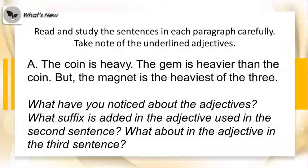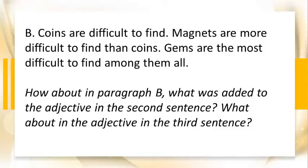Read and study the sentences in each paragraph carefully. Take note of the underlined adjectives. A. The coin is heavy. The gem is heavier than the coin. But the magnet is the heaviest of the three. What have you noticed about the adjectives? What suffix is added in the adjective used in the second sentence? What about in the adjective in the third sentence? B. Coins are difficult to find. Magnets are more difficult to find than coins. Gems are the most difficult to find among them all. How about in paragraph B? What was added to the adjective in the second sentence? What about in the adjective in the third sentence?